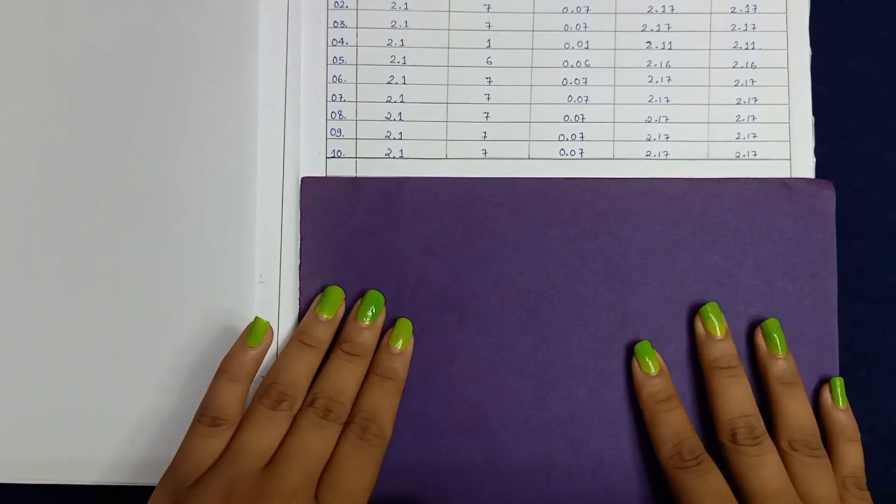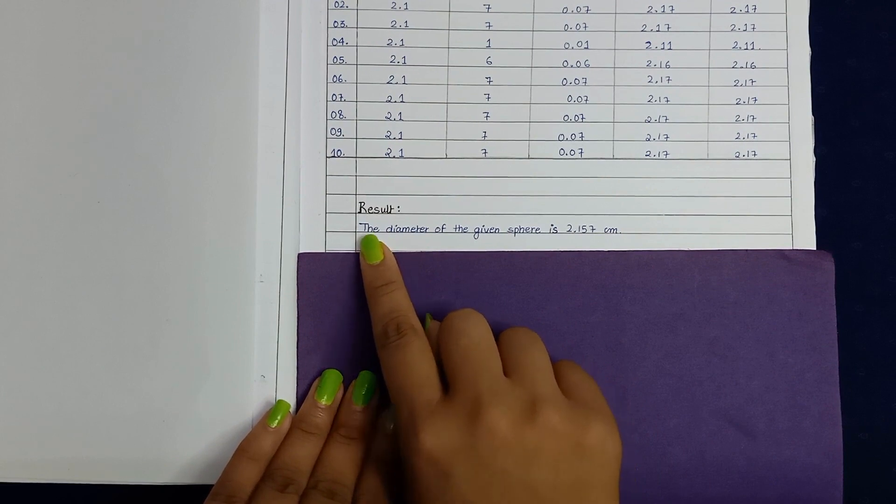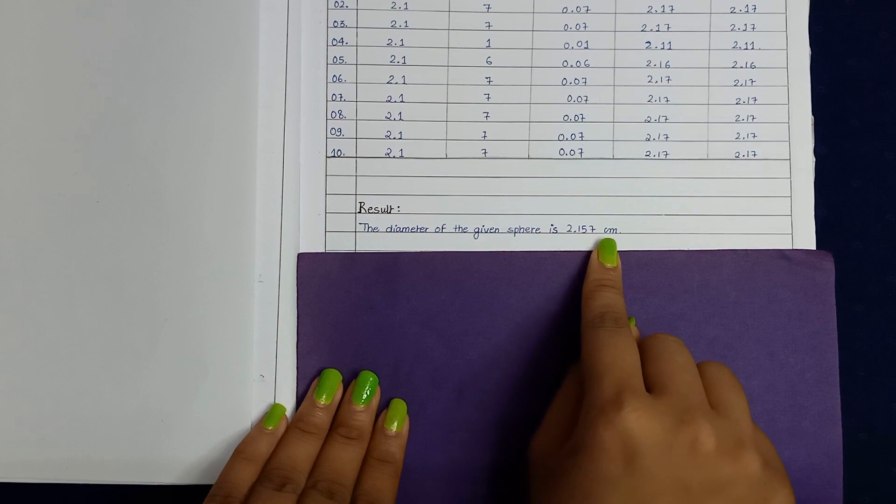Next, result. So in result part, the diameter of the given sphere is 2.157 cm.